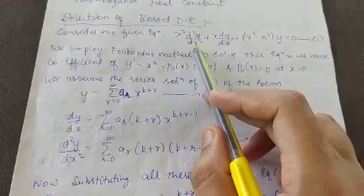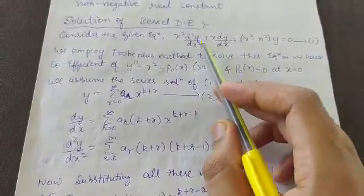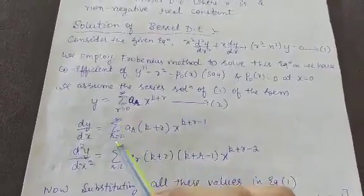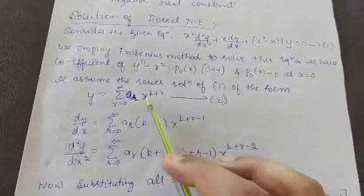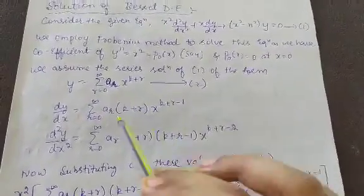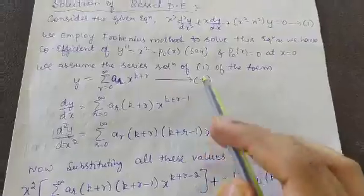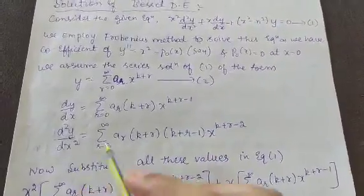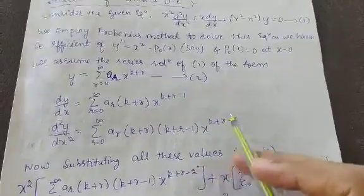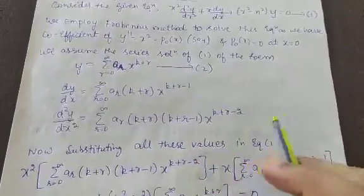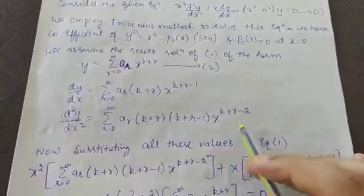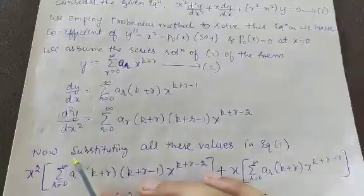We need the first and second derivatives. The first derivative is y' = Σ aᵣ (k+r) x^(k+r−1), using the rule d/dx[xⁿ] = n x^(n−1). The second derivative is y'' = Σ aᵣ (k+r)(k+r−1) x^(k+r−2).